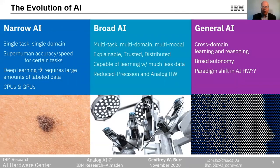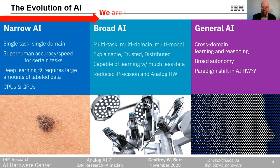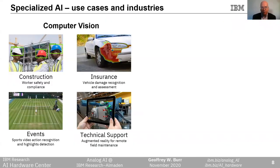Computer scientists throughout the world, including many of my colleagues at IBM Research, are driving the evolution of AI — from narrow AI that can learn from a lot of data to do one task really well, towards broad AI that can handle multiple tasks, domains, and modes, that can be explainable, trusted, and distributed, and that can still be trained to high accuracy even when we don't have a lot of training data. IBM is helping many enterprise clients with computer vision applications in fields such as construction, insurance, sporting events, and technical support.